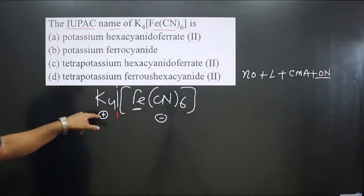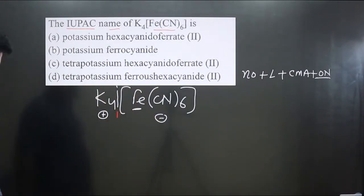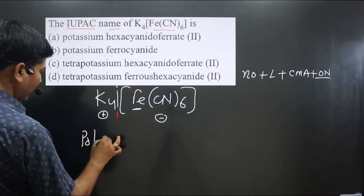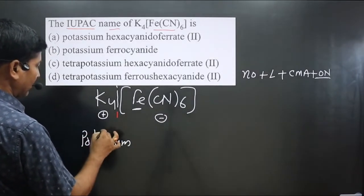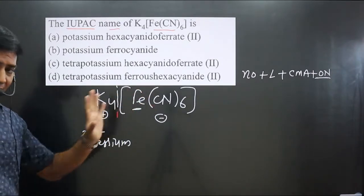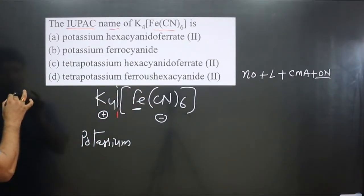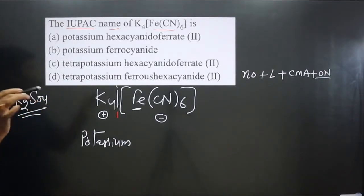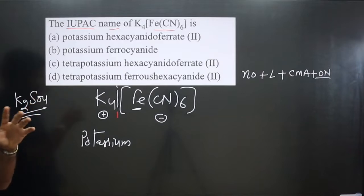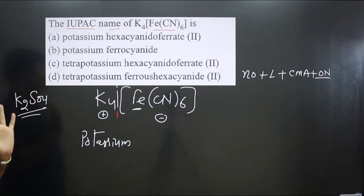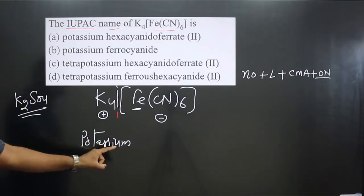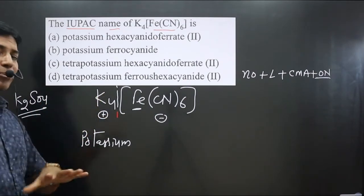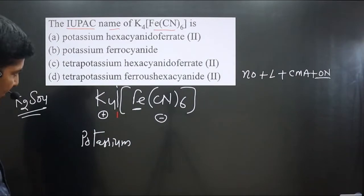We name the cationic part first, followed by the anionic part. The cationic part is potassium. Keep in mind: we do not say 'tetrapotassium' — just 'potassium'. For example, K₂SO₄ is called potassium sulfate, not dipotassium sulfate, because the number comes from balancing the charge. So we write only 'potassium' for the counter ion.